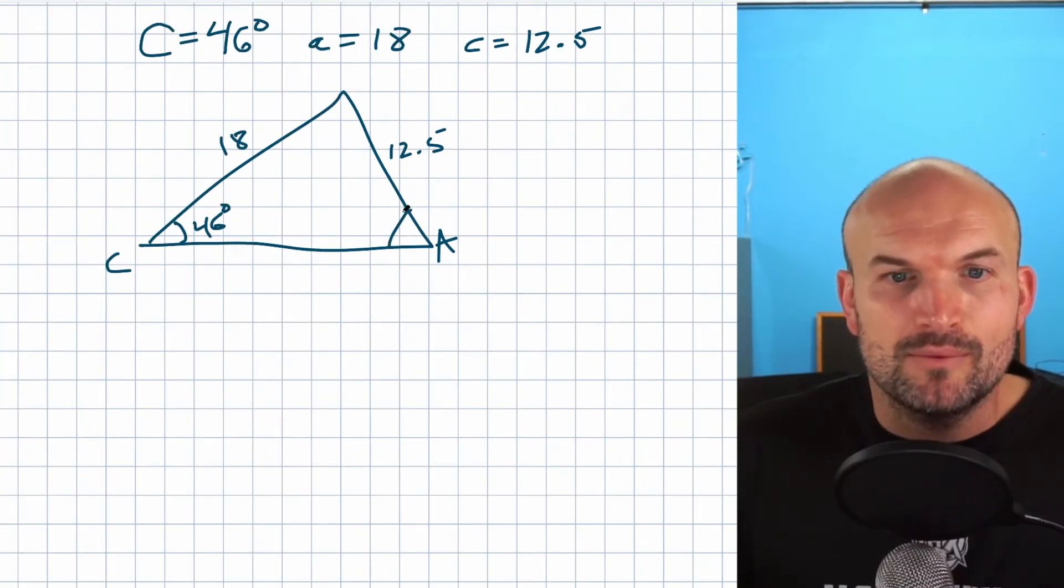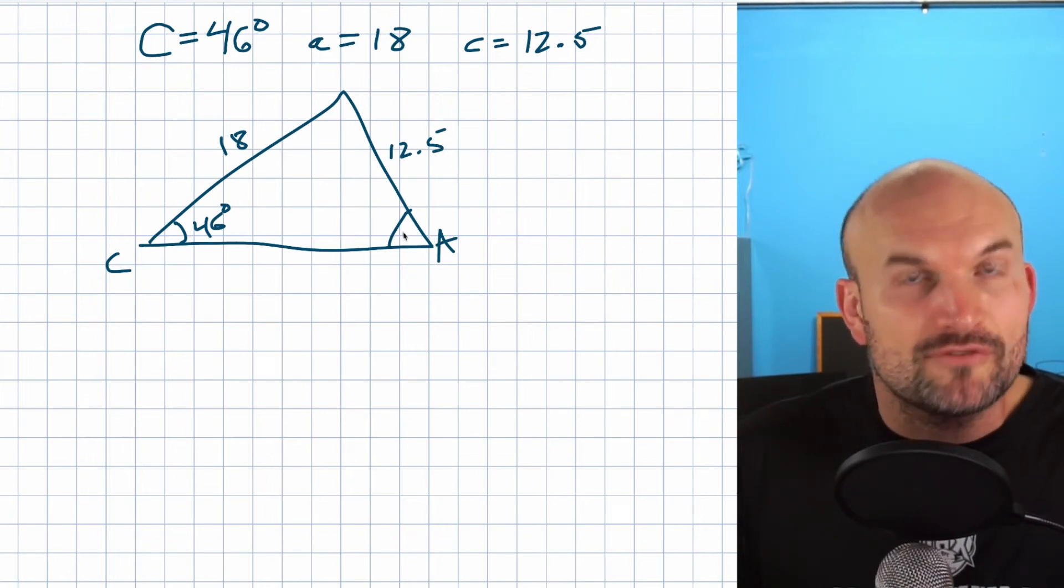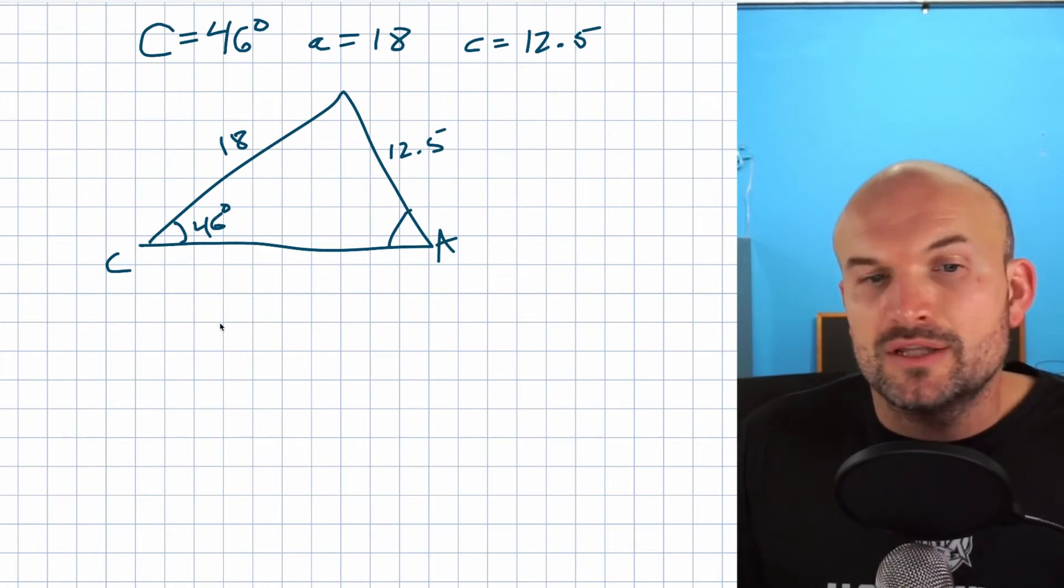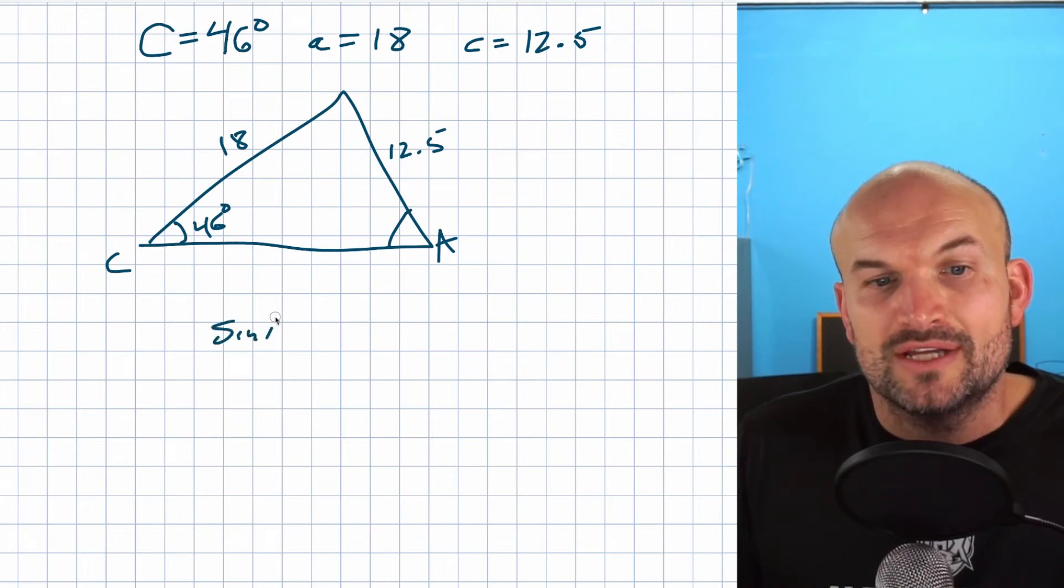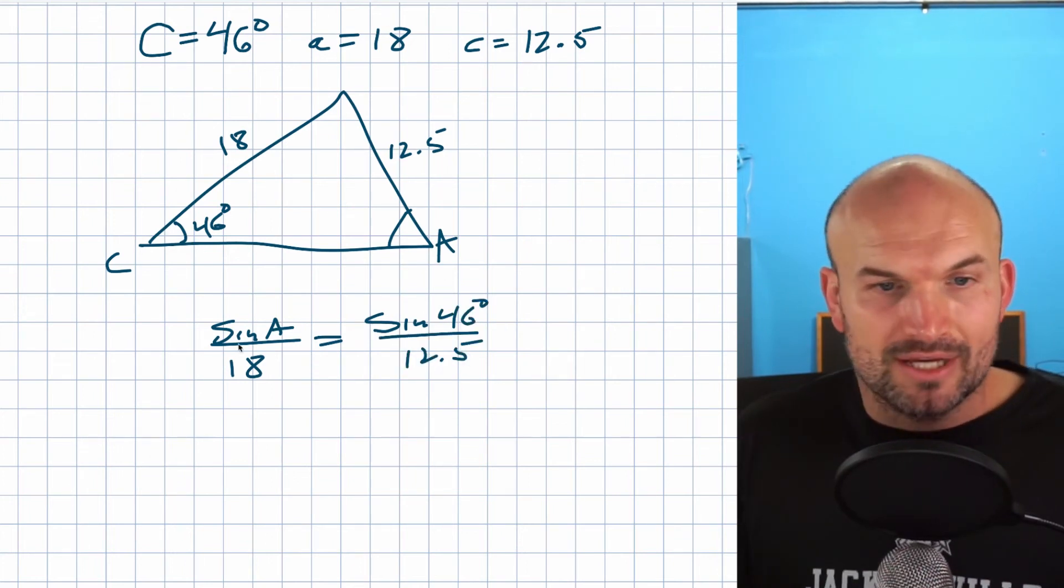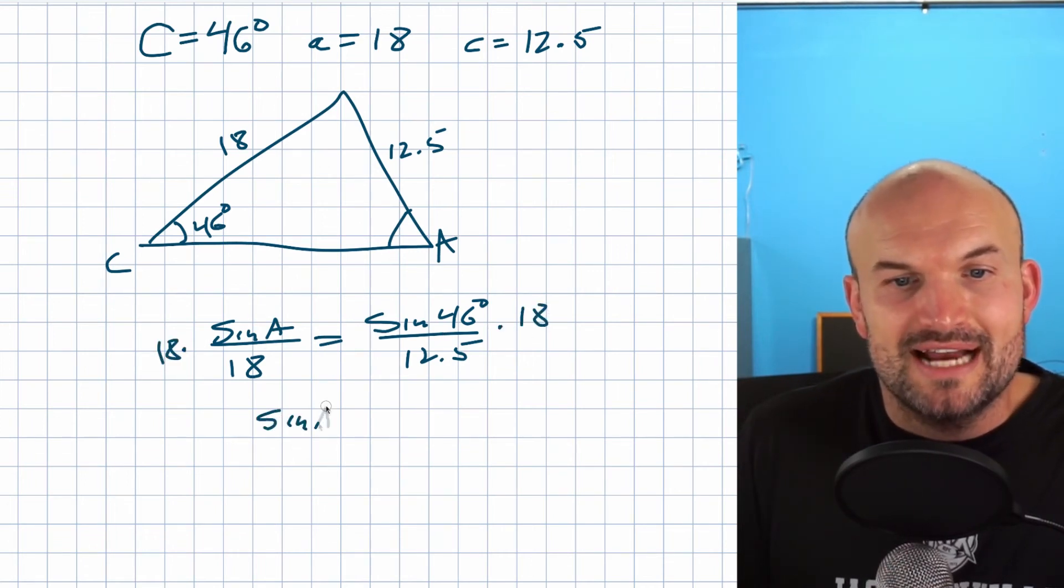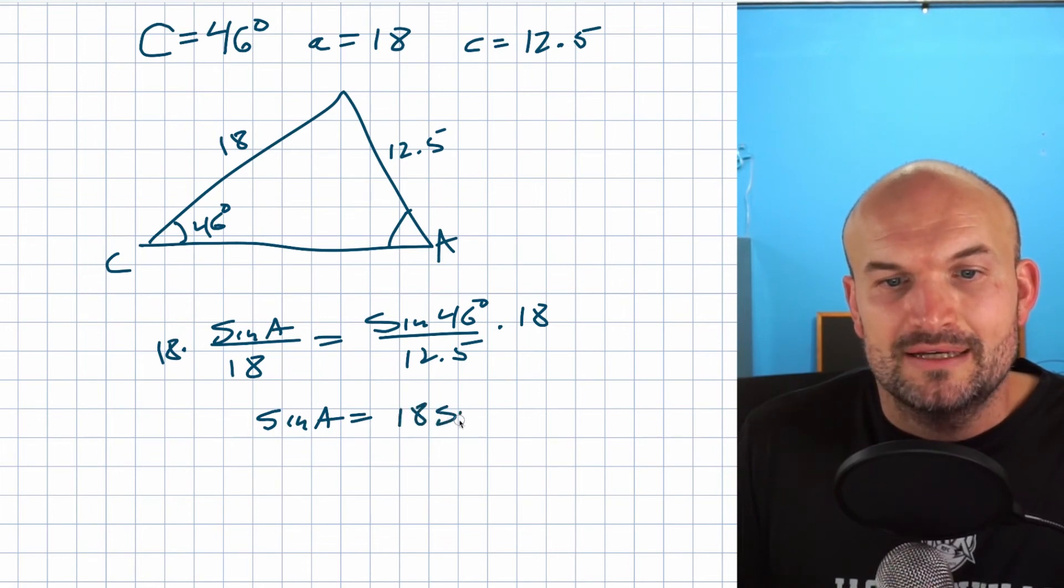What else can we do? Hopefully you remember, when we're solving for the missing sides of a triangle, we use the law of sines. I have enough for a ratio here, so I can solve for the angle A. Remember when using the law of sines, we always want to put our missing angle in the numerator. So the sine of A over 18 is equal to the sine of 46 degrees all over 12.5. All I got to do is solve for my sine of A. I'll multiply by 18 on both sides, and I get sine of A equals 18 times sine of 46 all over 12.5.